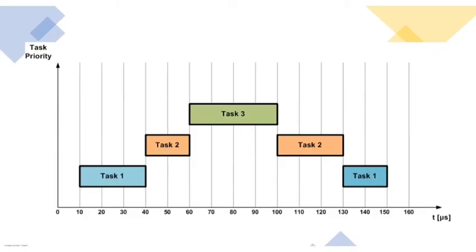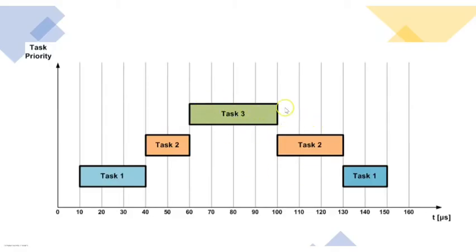Let us discuss preemptive scheduling with an example. Consider that task one was getting executed and task two arrives — the execution of task one stops, and it moves to the ready state. Then task two executes, but while task two is executing, task three arrives. Task two moves to the ready state and task three executes completely. Then task two is resumed, and after completion of task two, task one is resumed. So task one and task two are clearly interrupted here — this is called preemptive scheduling.